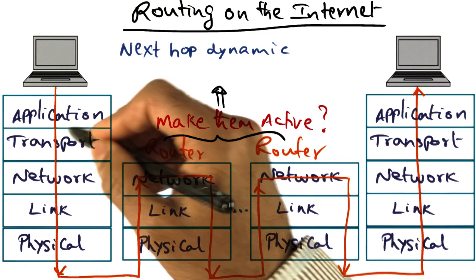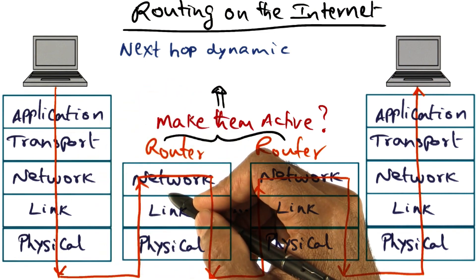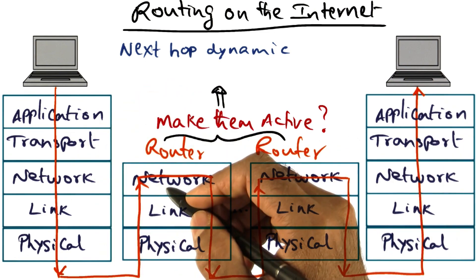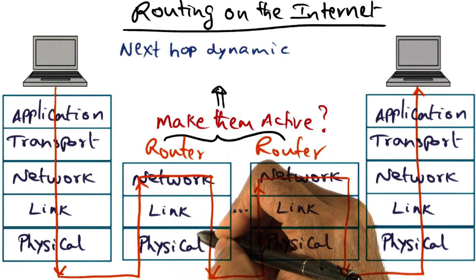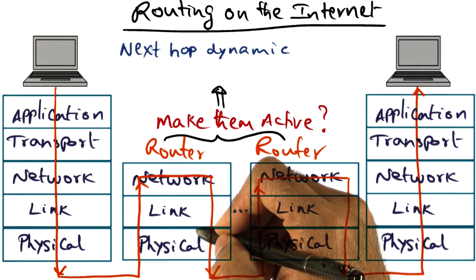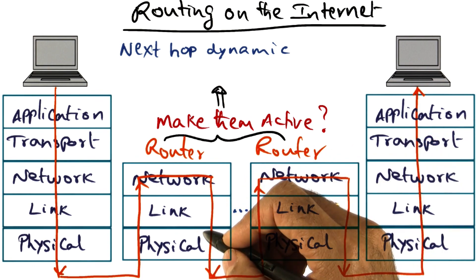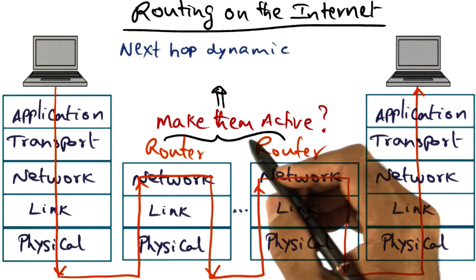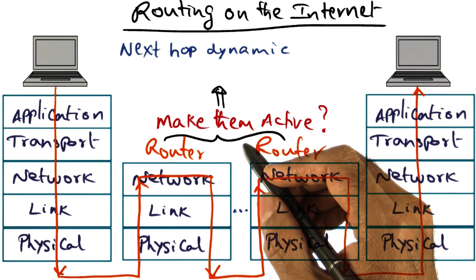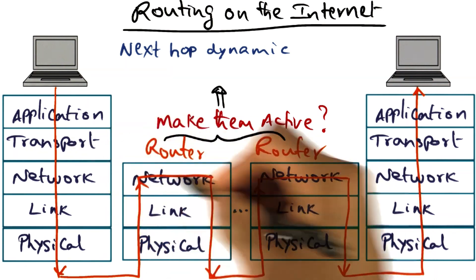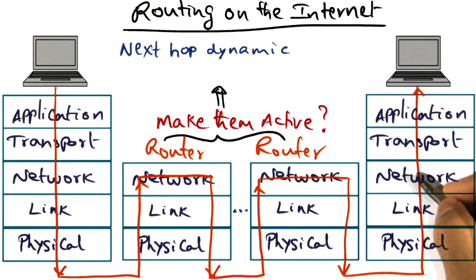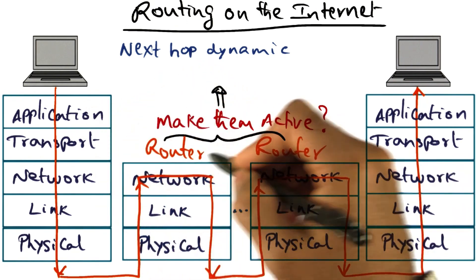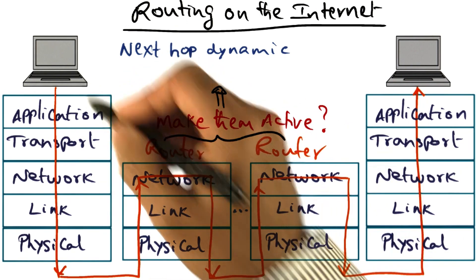In other words, the packet, in addition to the payload intended for the destination, also carries code with it, and that code is executed by the router to make a determination as to what to do with this packet in terms of routing it towards the desired destination. This sounds really clever because it can provide customized service for network flows going through the network, and every network can have its own way of choosing the desired route from source to destination.